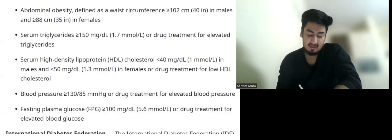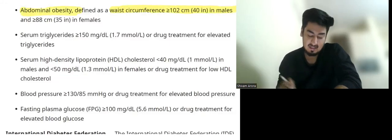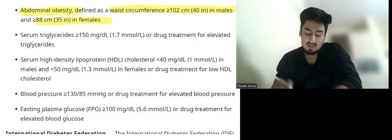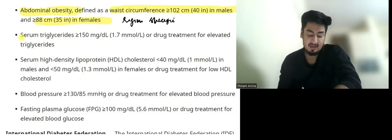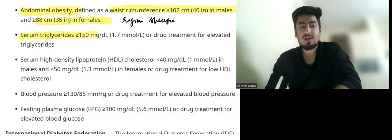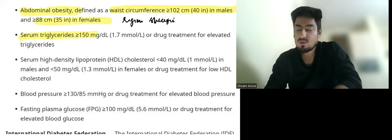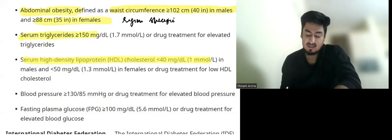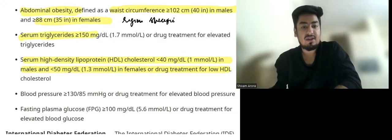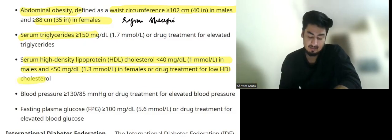The first parameter is abdominal obesity, defined by waist circumference of more than 102 cm in males and 88 cm in females — though now it is considered region-specific for Asians and non-Asians. Second, serum triglyceride more than 150, or patient is on drug treatment for elevated triglycerides. Third, serum HDL less than 40 in males and less than 50 in females, or patient is on drug treatment for low HDL.